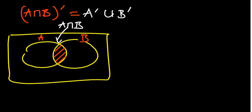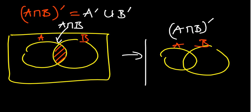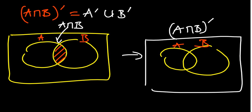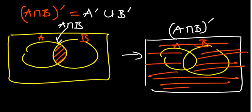Now A intersection B complement will be the region outside that. So if you draw the same sets, your complement will be the entire region except A intersection B. Only the region outside A intersection B has been shaded — that is the left-hand side.